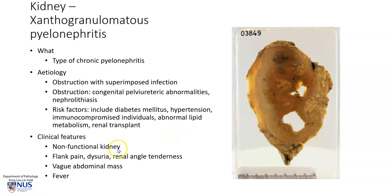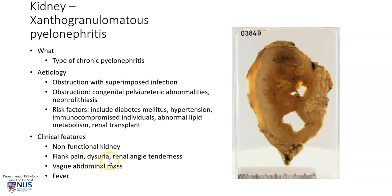Clinically, the kidney may be non-functional depending on the extent of parenchymal damage. There may be flank pain and renal angle tenderness, as well as dysuria, and there may also be a palpable abdominal mass. Systemic symptoms such as fever may be present as well.